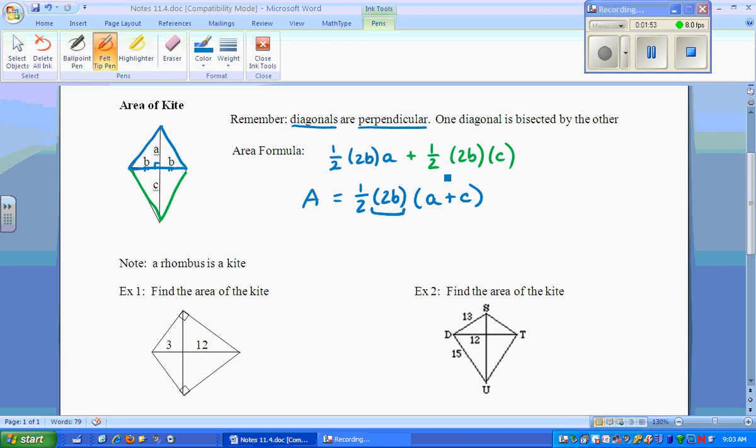2B is one of the diagonals. A plus C is the length of the other diagonal. So what's the area formula for a kite? 1 half diagonal 1 times diagonal 2.